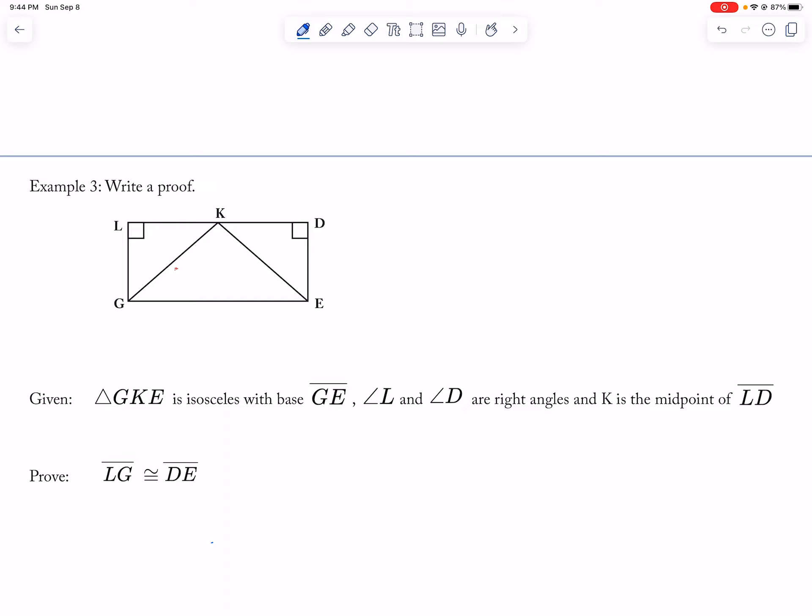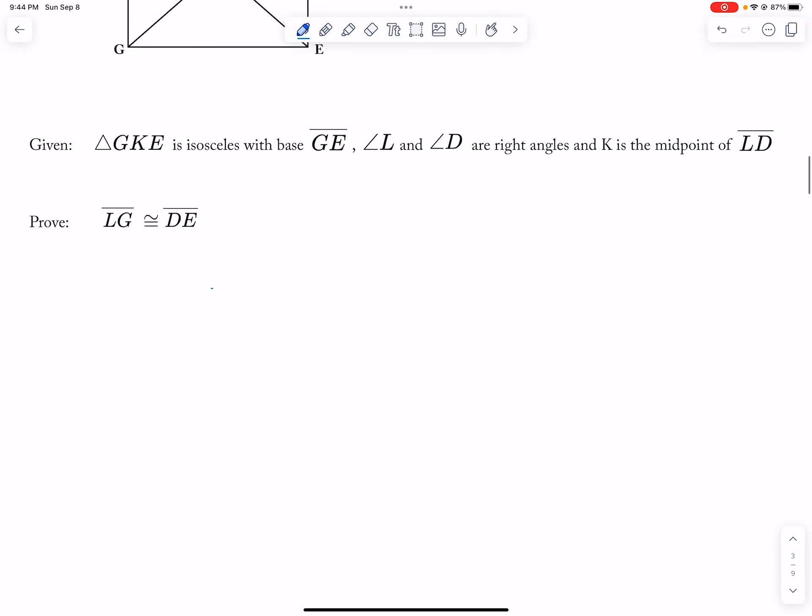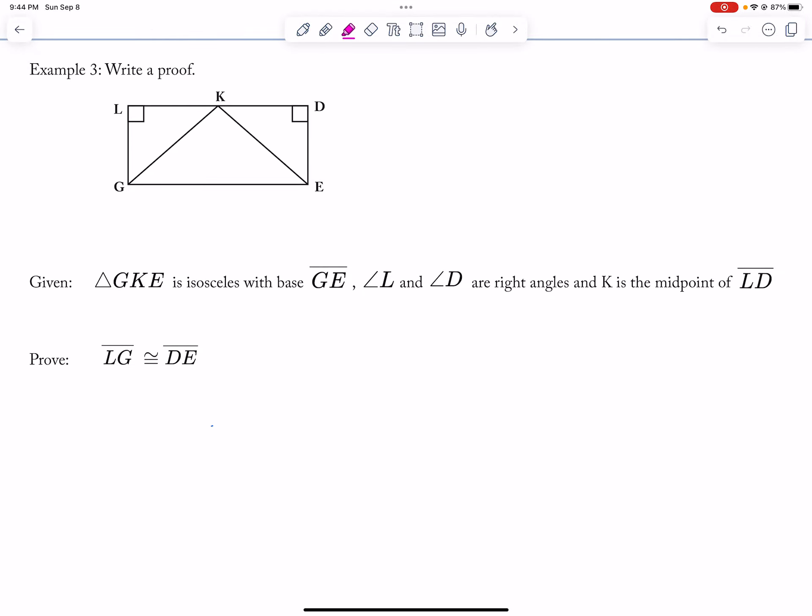So let's look at... Okay, so this triangle is isosceles.